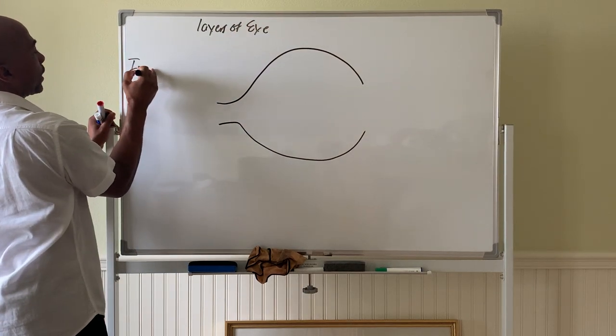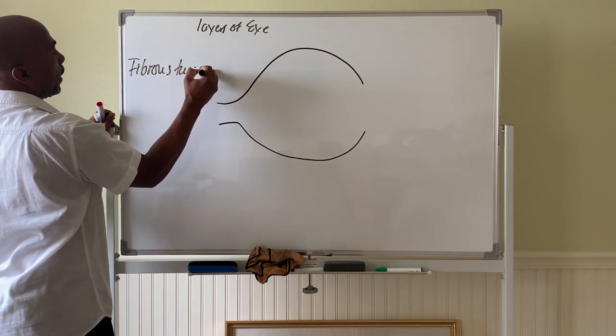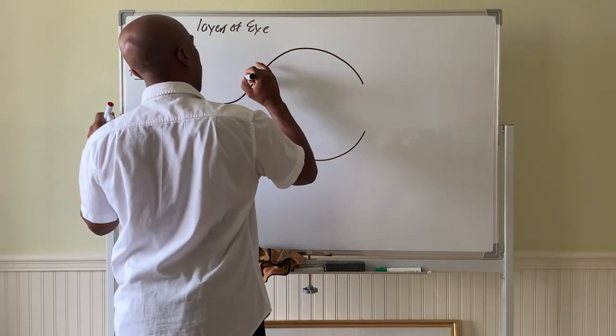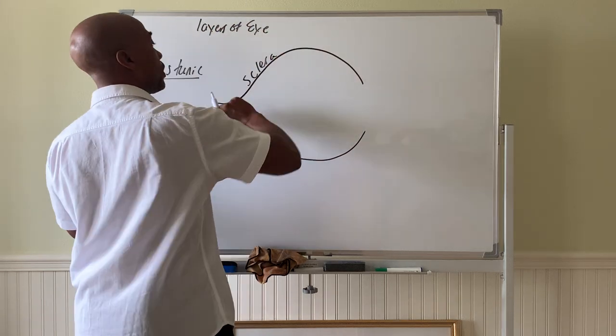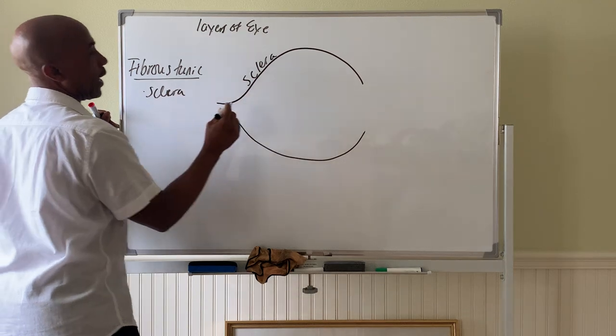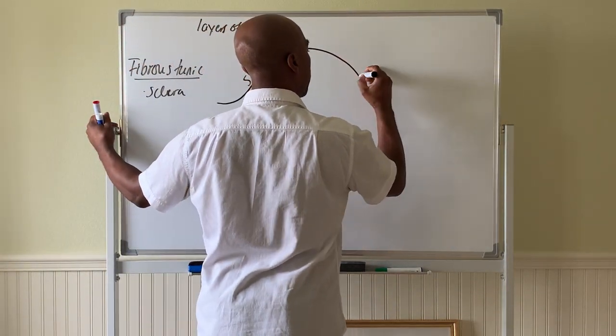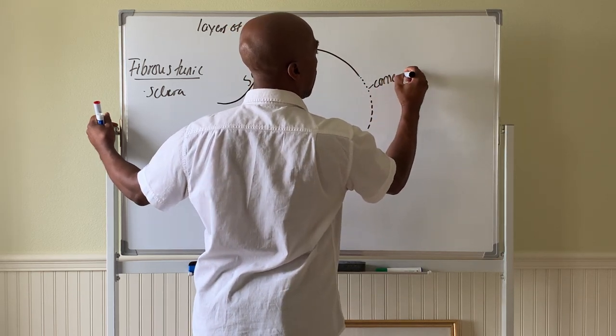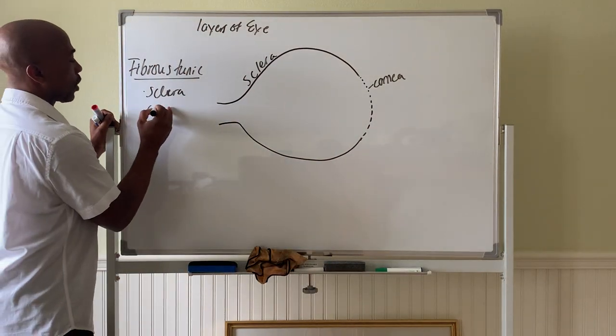Your fibrous tunic has two parts to it. The most posterior part, again the white part of the eye, like this truss in the back of the eye, that's called a sclera. So you have your sclera and towards the front the sclera becomes transparent to form your cornea.